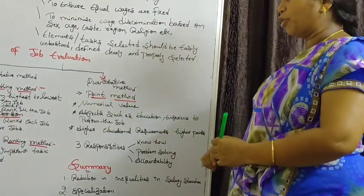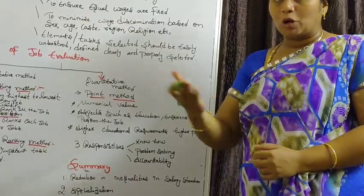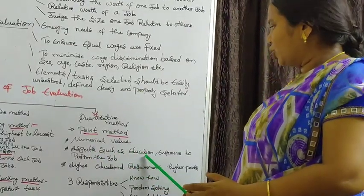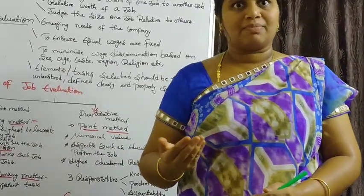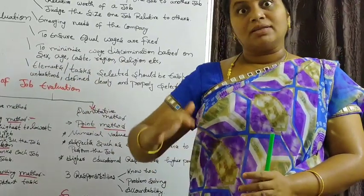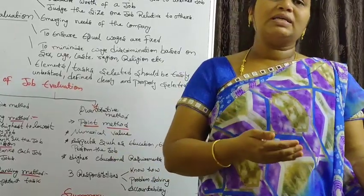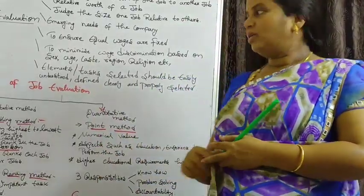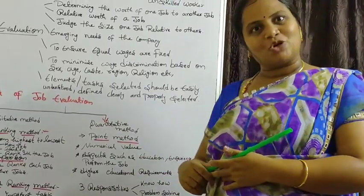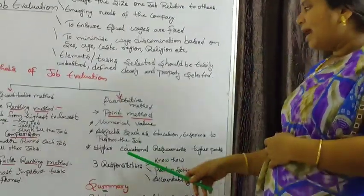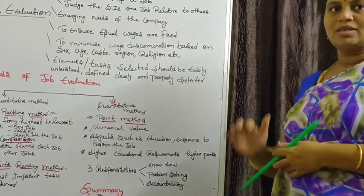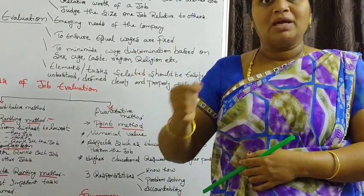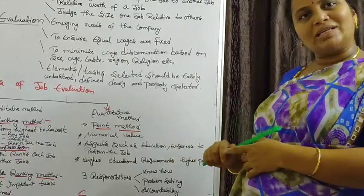The next method is the quantitative method, also called the point method. Point means numerical value — it is based on numbers. Aspects such as education and experience to perform the job are considered. For example, if a person has 20 years of experience the salary structure is higher; a person with only 2 years of experience has a different salary structure. Higher educational requirements earn higher points, so it is called the quantitative method.